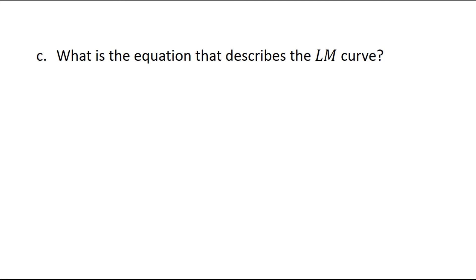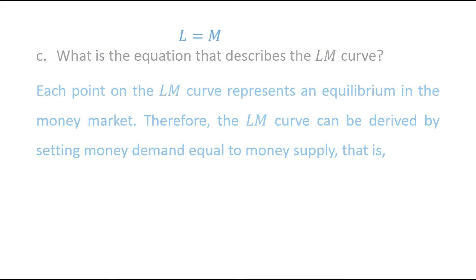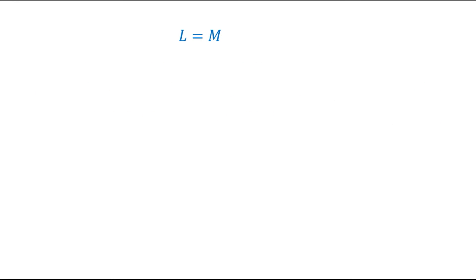Part C asks: what is the equation that describes the LM curve? Each point on the LM curve represents an equilibrium in the money market. Therefore, the LM curve can be derived by setting money demand equal to money supply, that is L equals to M.